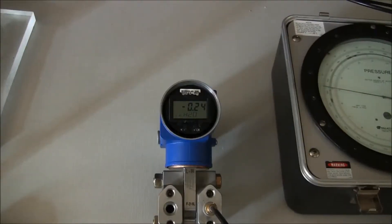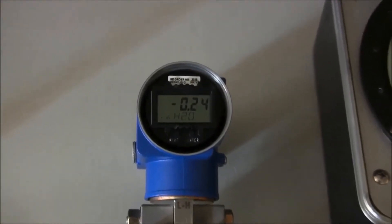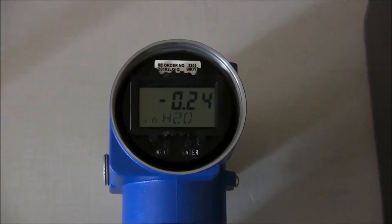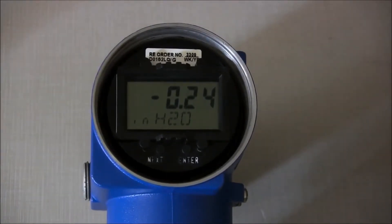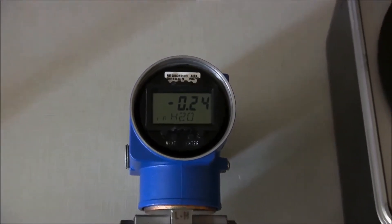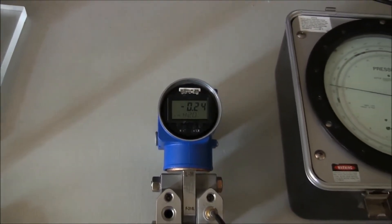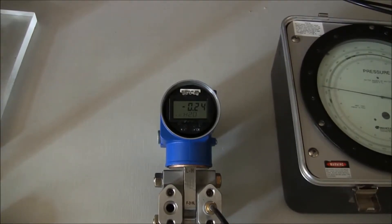The transmitter being used is a model IDP10-T22B21F with a configured range of 0 to 100 inches of water. We will connect our pressure source to the high side of the transmitter and leave the low side vented to atmosphere.